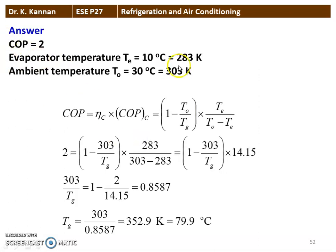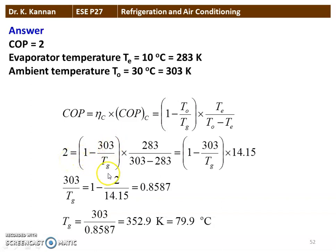COP equals 2. Evaporator temperature is 10 degree Celsius, which is 283 Kelvin. Ambient temperature is 30 degree Celsius, which is 303 Kelvin. COP equals (1 minus TO by TG) into (TE by TO minus TE). Substituting: 2 equals (1 minus 303 divided by TG) into (283 divided by 303 minus 283), which simplifies to (1 minus 303 by TG) into 14.15. Rearranging and calculating, the generator temperature is 352.9 Kelvin, or 79.9 degree Celsius. That is the answer to the question.